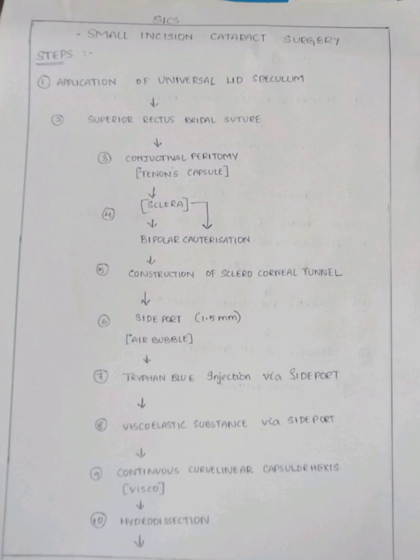The second step is superior rectus bridal suture, which stabilizes the globe. The third step is conjunctival peritomy, which is performed in the tenon's capsule. The fourth step is bipolar cauterization, which is performed with the help of cautery and helps in decreasing the bleeding.